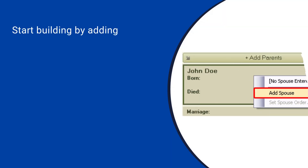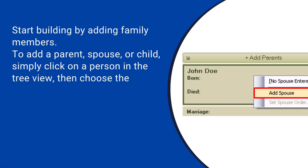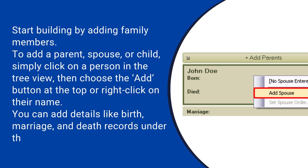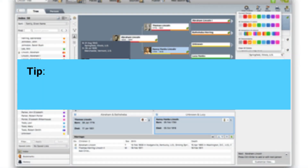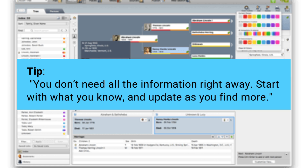Start building by adding family members. To add a parent, spouse, or child, simply click on a person in the tree view, then choose the Add button at the top or right-click on their name. You can add details like birth, marriage, and death records under the Facts tab. Tip: you don't need all the information right away — start with what you know and update as you find more.